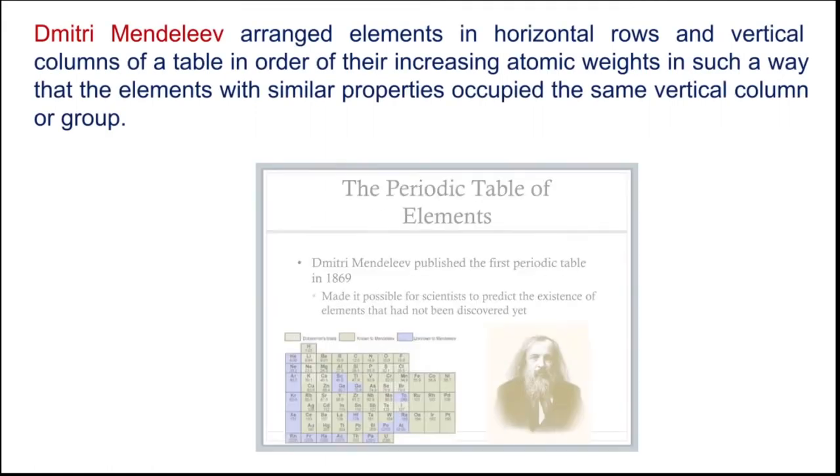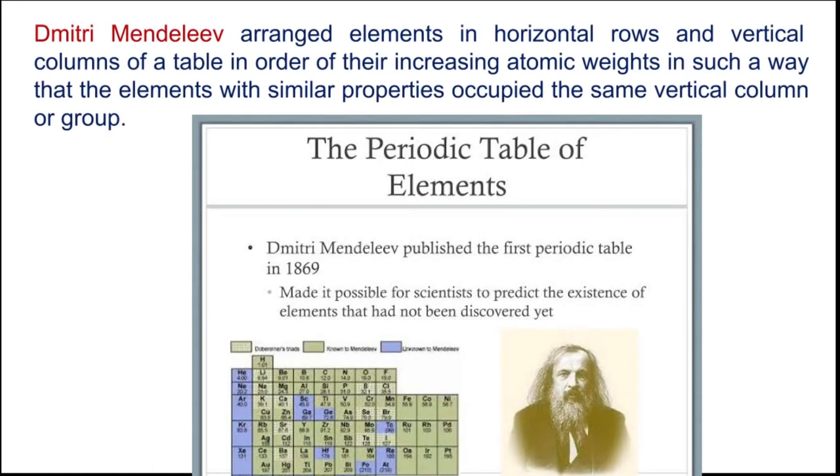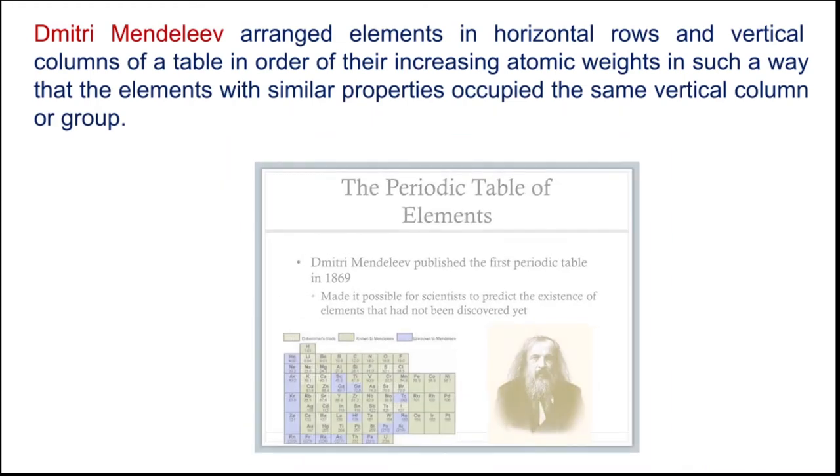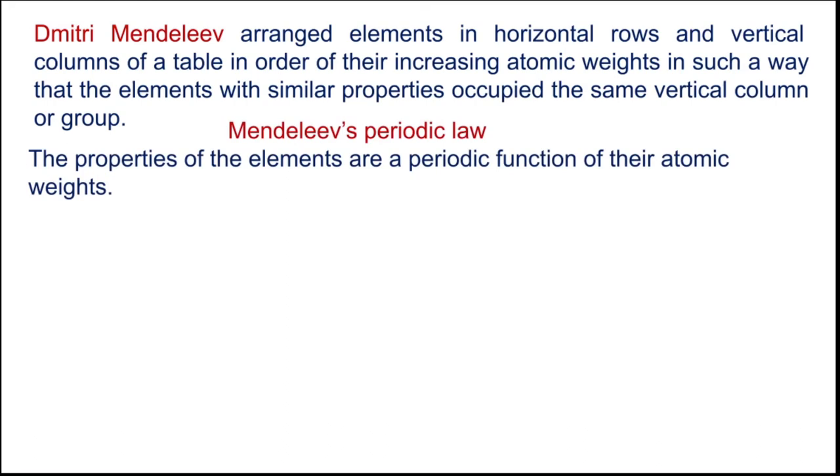Later, Dmitri Mendeleev arranged elements in horizontal rows and vertical columns of a table in order of their increasing atomic weights in such a way that elements with similar properties occupied the same vertical column or group. Mendeleev was the first scientist to introduce the groups and column method. According to Mendeleev's periodic law, the properties of elements are a periodic function of their atomic mass. The main essence is he arranged elements according to the increasing order of atomic weights.